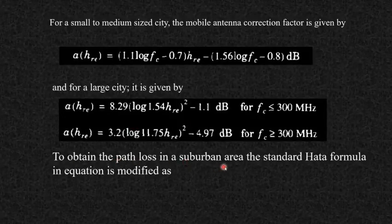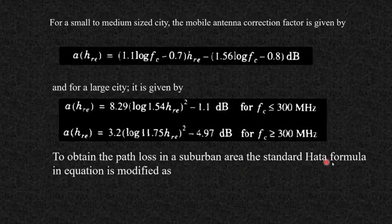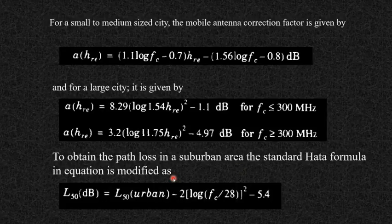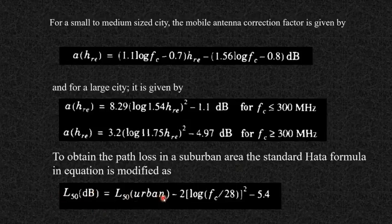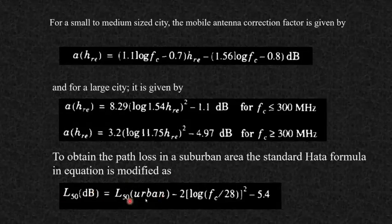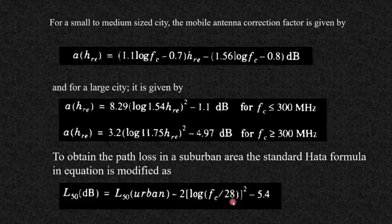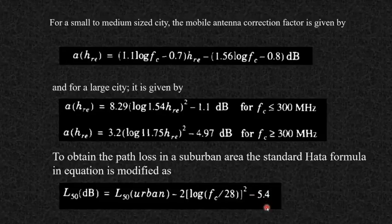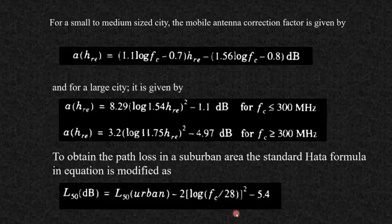To obtain path loss in suburban areas, the standard Hata urban formula is modified as: L50(dB) = L50(urban) − 2 × (log(Fc/28))² − 5.4. This is the modification applied to the standard formula when used in suburban areas.